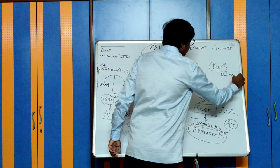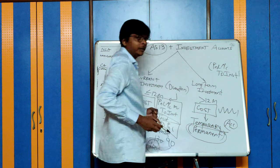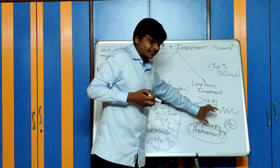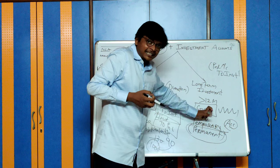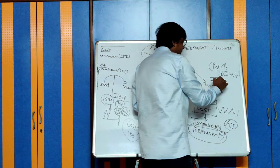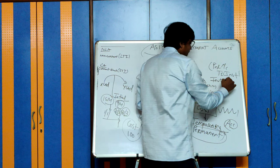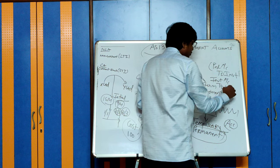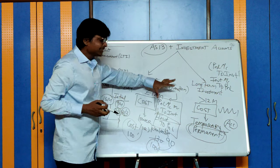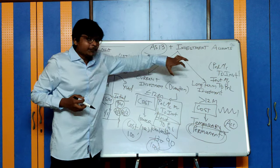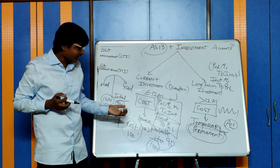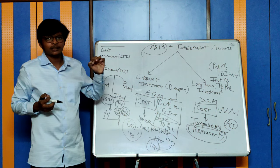However, in the future, if such a decline gets reversed, then again I can debit my investment account and credit your profit and loss account. So this is the basics of what price you record at the time of initial recognition and what to do at the balance sheet date.